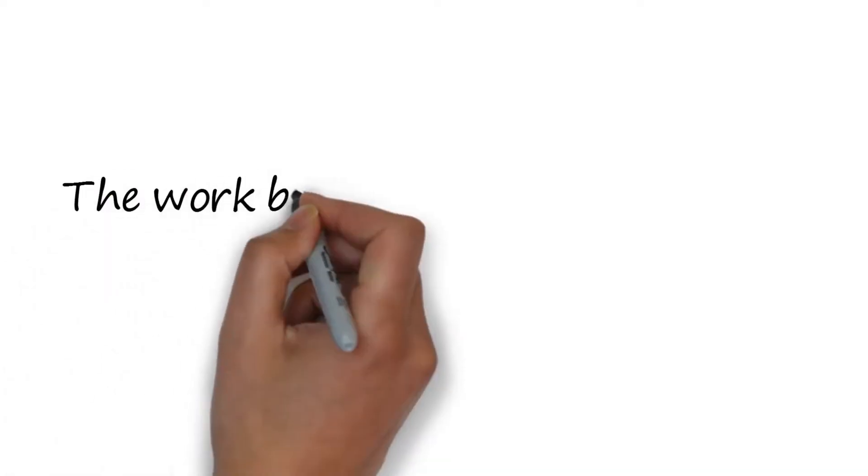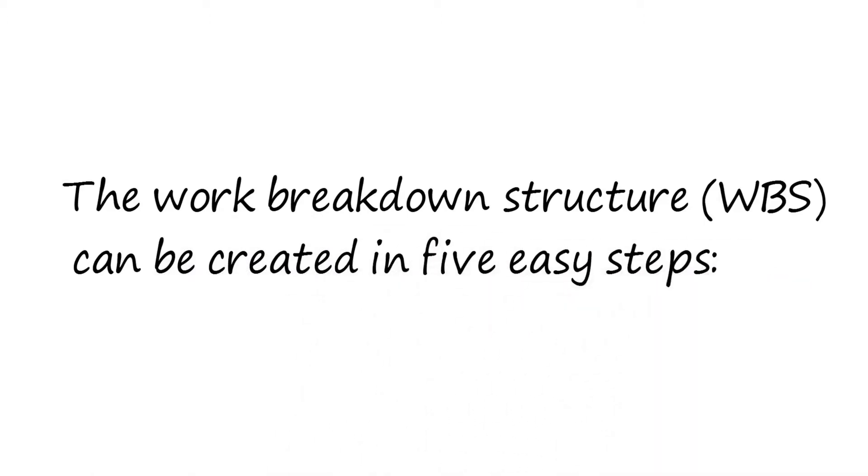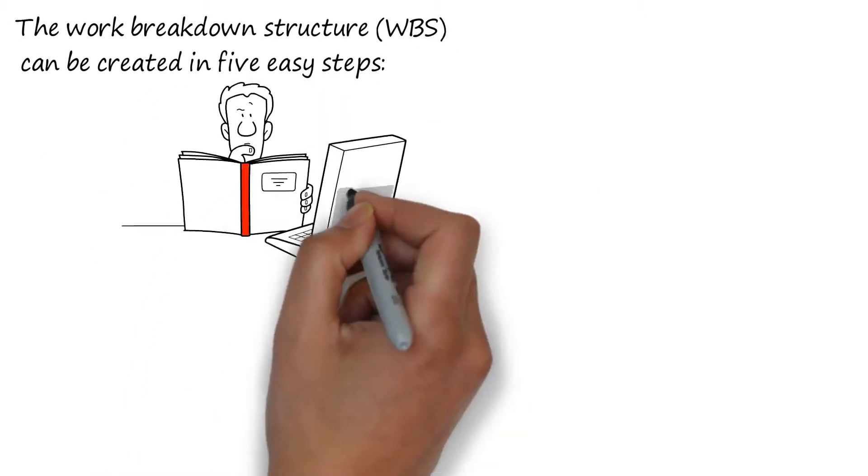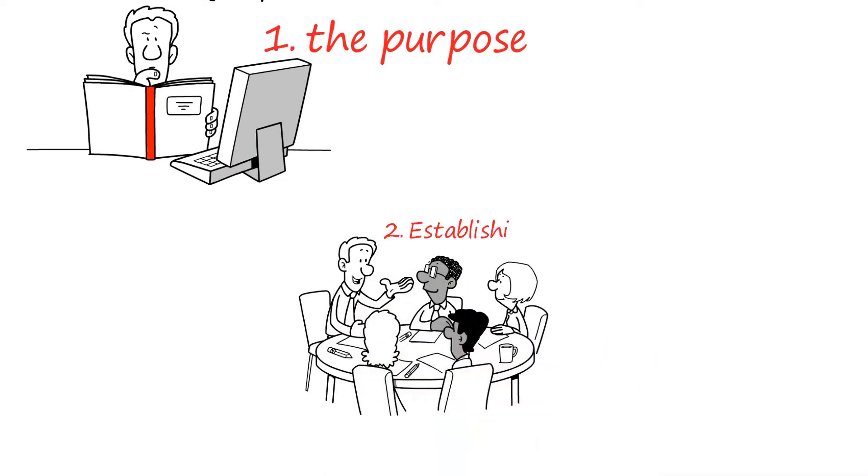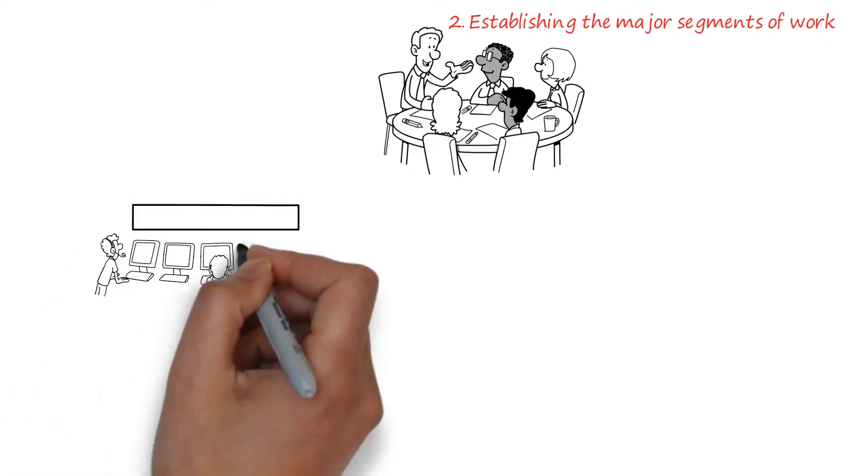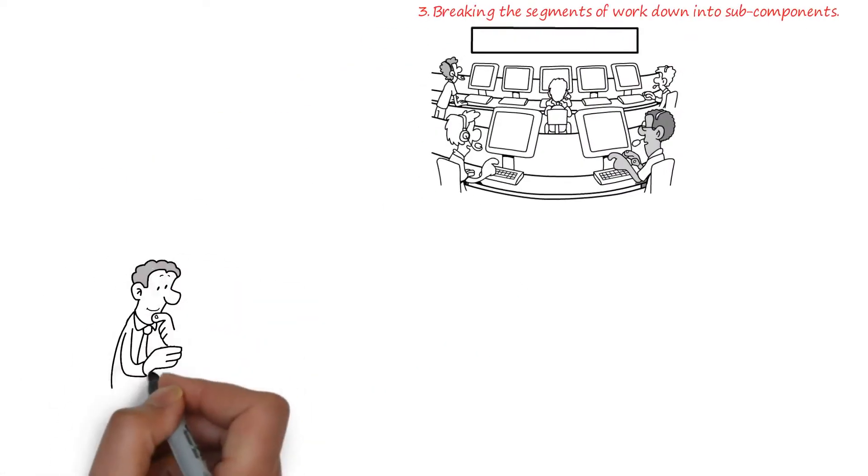The Work Breakdown Structure (WBS) can be created in five easy steps. One: identify the purpose of the project. Two: establish the major segments of work. Three: break the segments of work down into subcomponents.